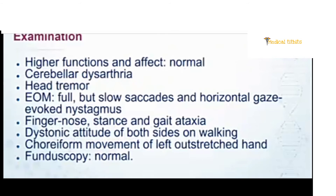On clinical examination, he had cerebellar dysarthria — that means scanning speech — and tremulousness of the head, also known as titubation. Higher functions and affect were normal. Eye movements were full but there were slow saccadic breaks and horizontal gaze-evoked nystagmus. There was finger-nose ataxia and stance-and-gait ataxia. Additionally, when walking, the entire trunk and limbs became dystonic and he exhibited choriform movements of the left outstretched hand on both sides.